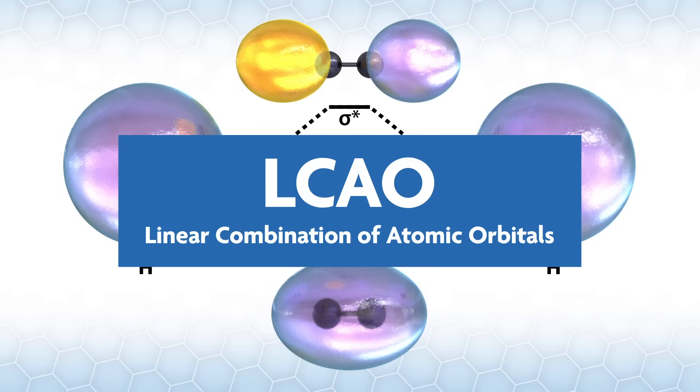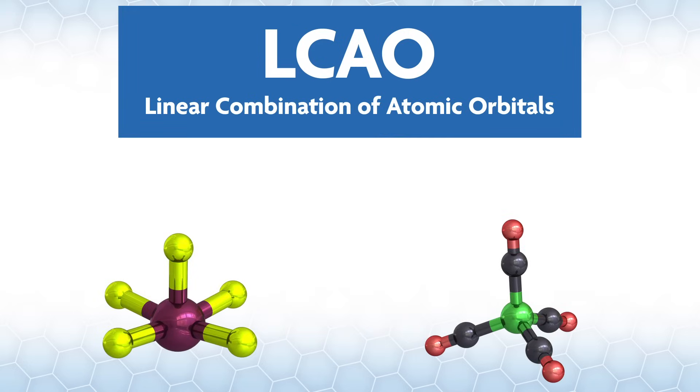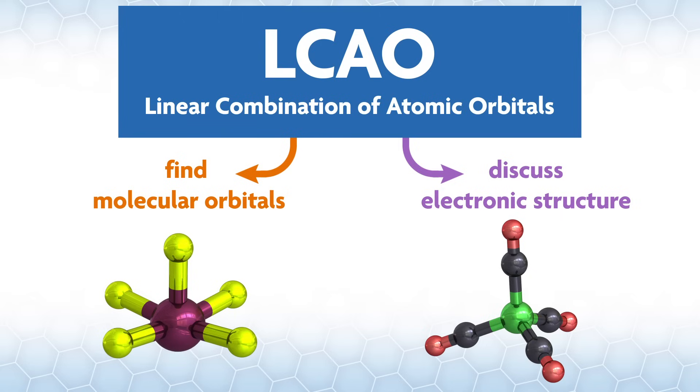Often, this is used to find the MOs for a system. The procedure gets a little more complicated when you have to move to polyatomic systems. However, chemists still use LCAO to find the molecular orbitals and discuss electronic structure.